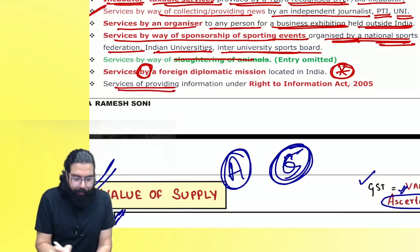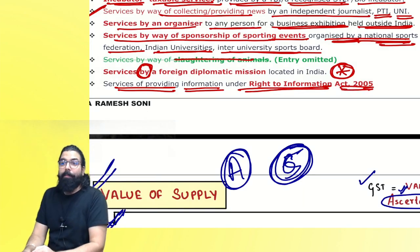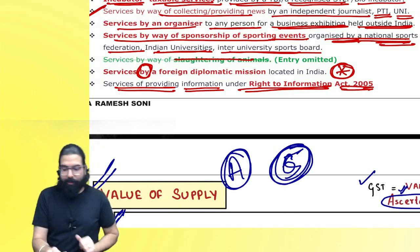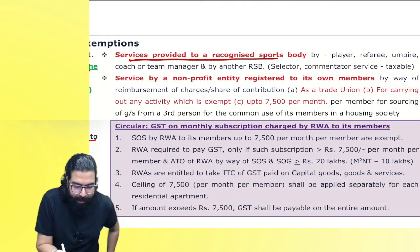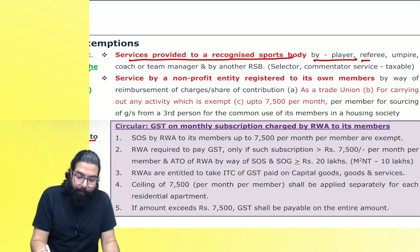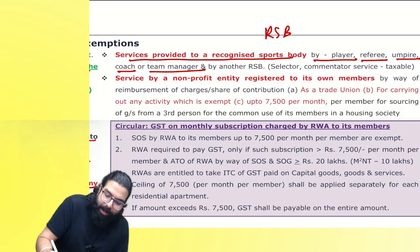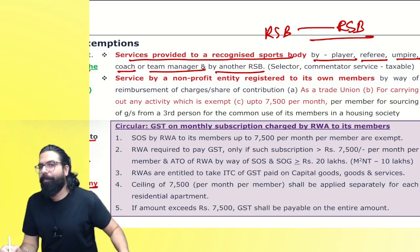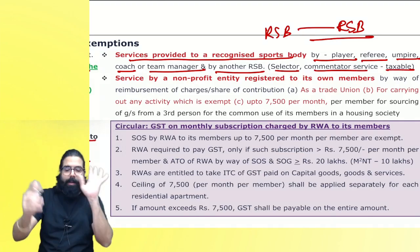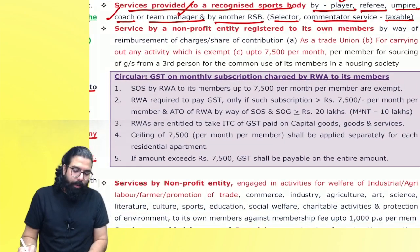Services of providing information under Right to Information Act — when you file an RTI, they charge you ₹10–₹20, and on that there is no GST. Services provided to a recognized sports body — a player, referee, umpire, coach, team manager providing services, or one recognized sports body providing to another recognized sports body — those services will always be exempted. Spectator and commentator services are always taxable. What is exempt is only player, referee, umpire, coach, team manager, or one recognized sports body to another.